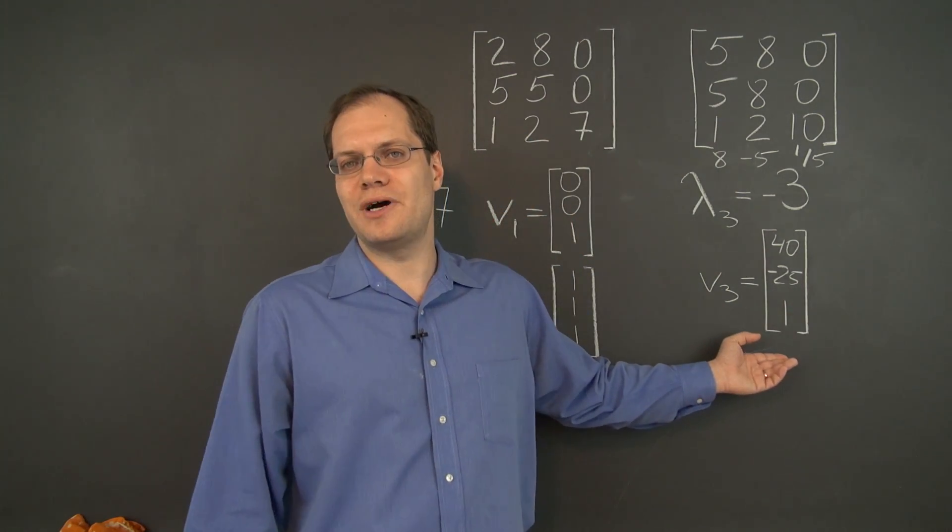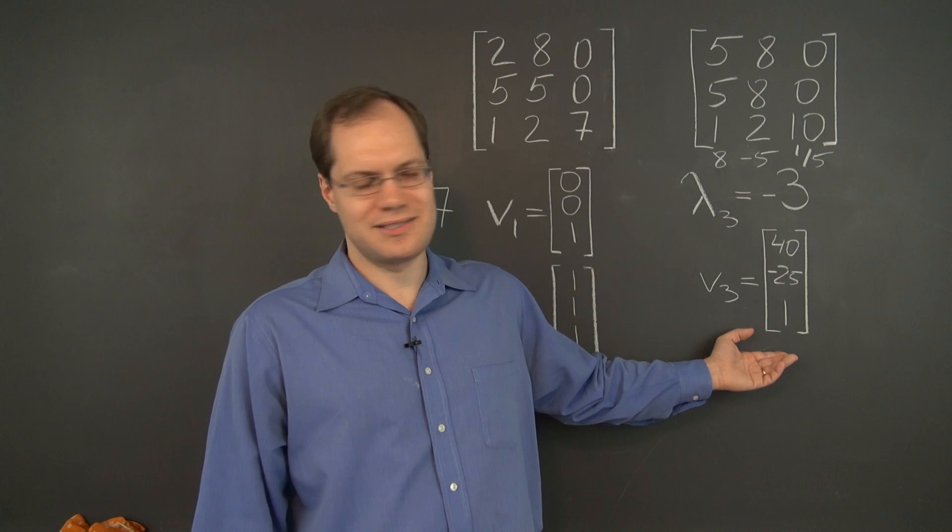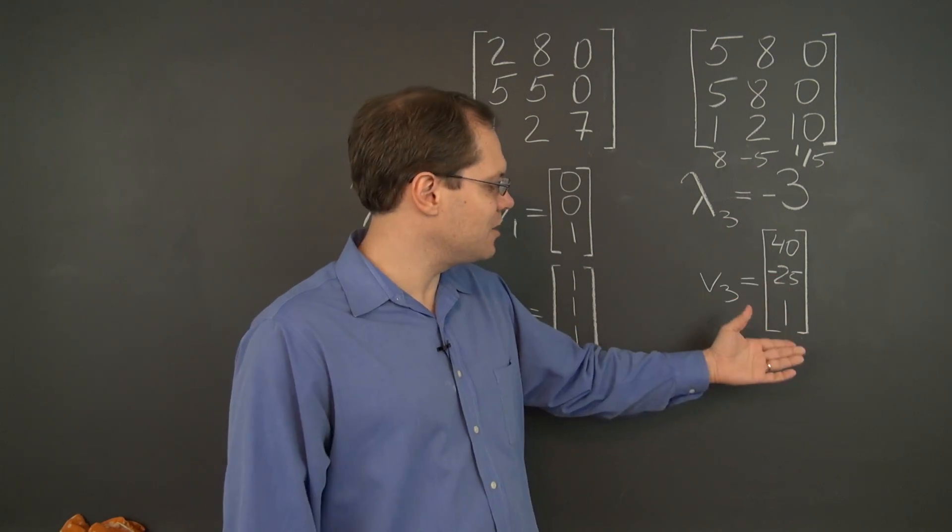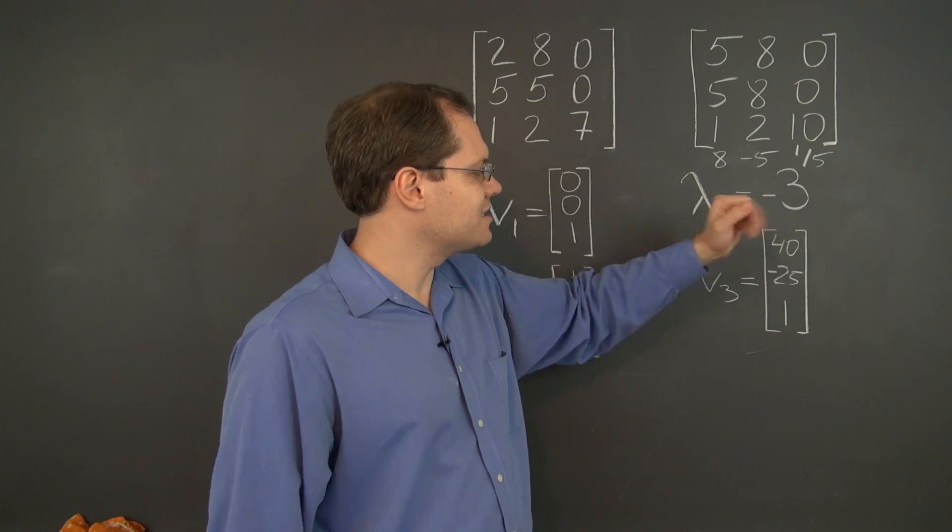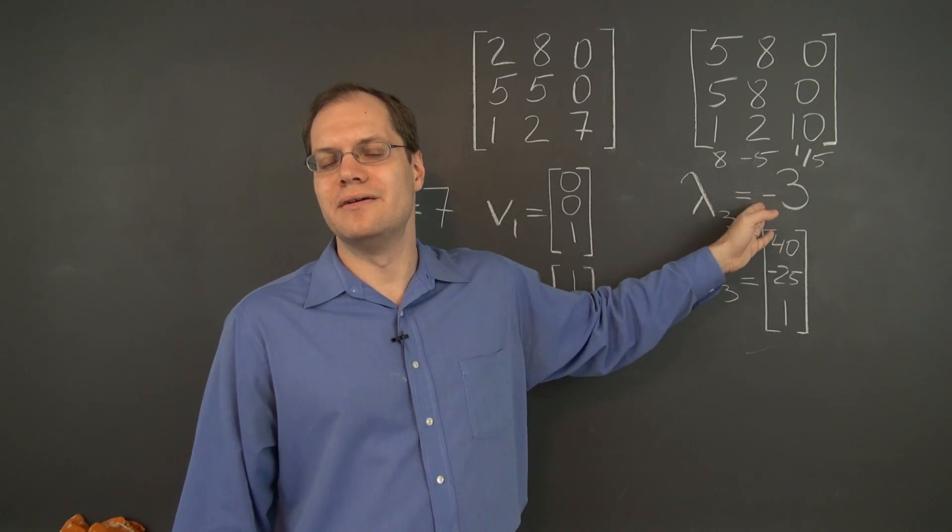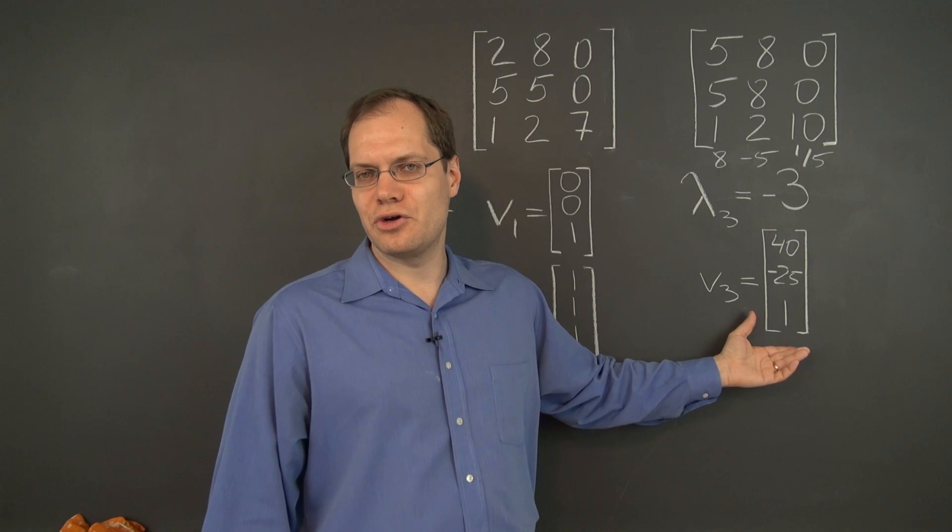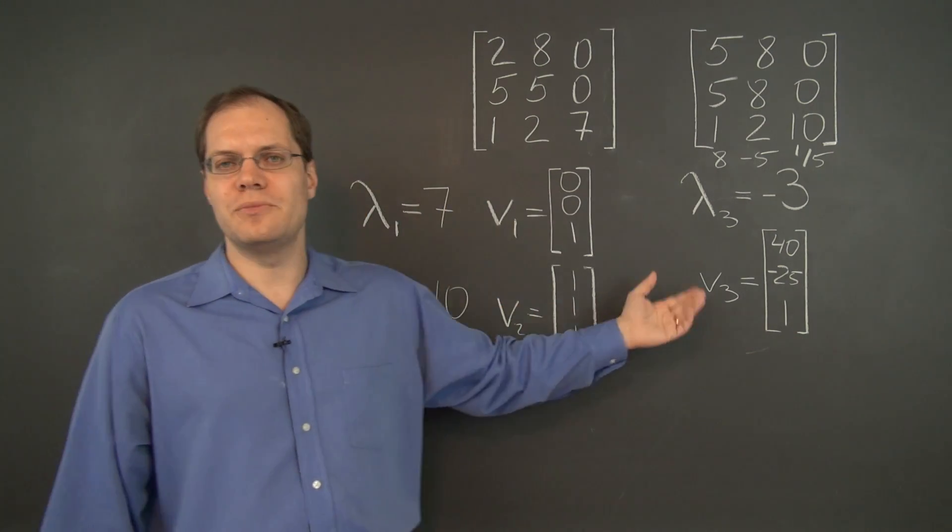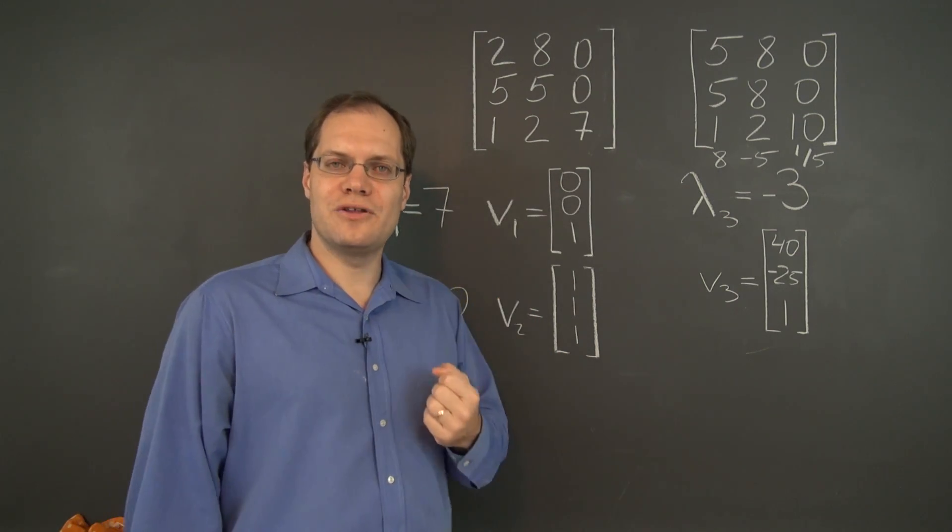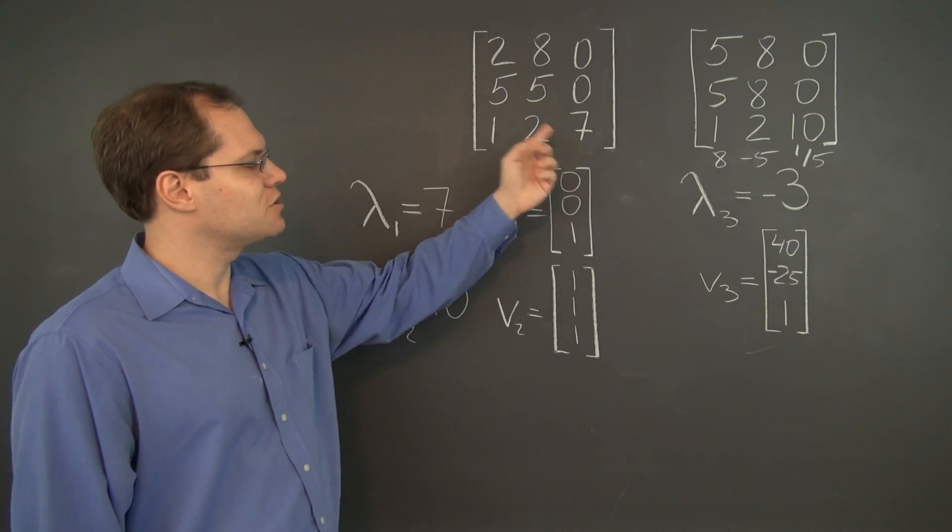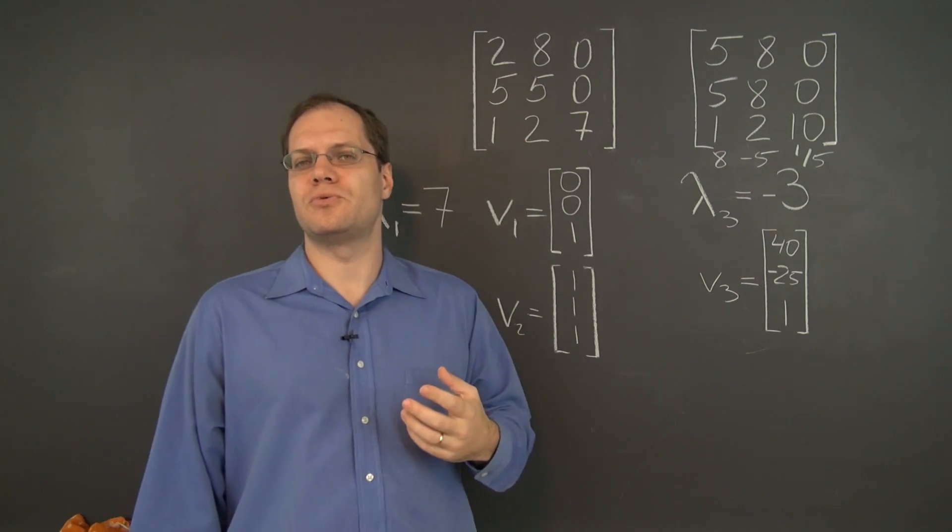And now you can see why we could not have possibly guessed this eigenvector. Look how big the numbers in this eigenvector are. But nevertheless, negative 3 proved to be an eigenvalue, this is the corresponding eigenvector, and we have just determined all eigenvalues and all the corresponding eigenvectors of this matrix without too much work.